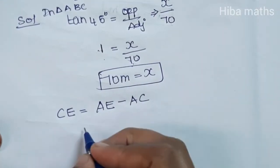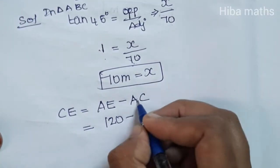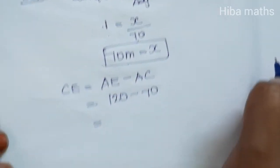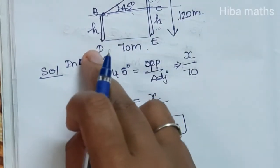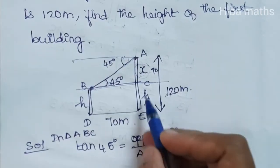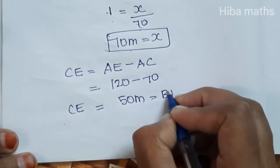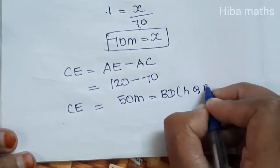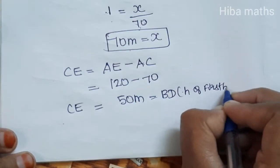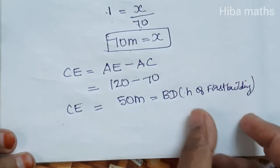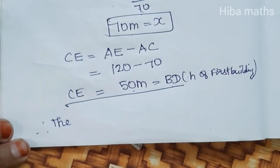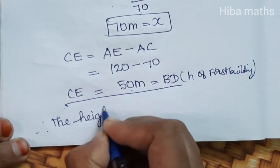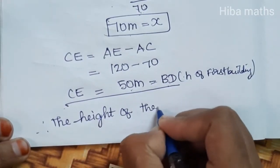So, AE minus AC: AE value is 120, AC value is 70. 120 minus 70 equals 50 meters, which equals x. This is CE. CE and BD are equal in the diagram. BD is the first building, so the height of the first building is 50 meters.